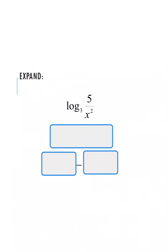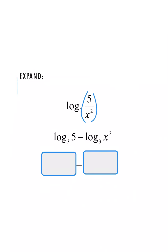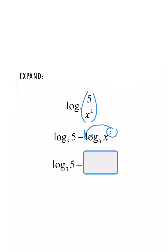Now let's combine all our properties. We have log base 3 of 5 divided by x squared. Because we're dividing, by property 2 we expand by subtracting: log base 3 of 5 minus log base 3 of x squared. Log base 3 of 5 has no relationship between 3 and 5 and no exponents, so it's already simplified. For log base 3 of x squared, I have an exponent, so I move the 2 to the front. The final expanded form is log base 3 of 5 minus 2 log base 3 of x.